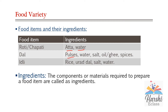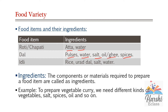These — pulses, water, salt, oil or ghee, and spices — are called the ingredients of dal. Ingredients are the components or materials required to prepare a food item. For example, to prepare vegetable curry, we need different kinds of vegetables, salt, spices, oil, and so on.